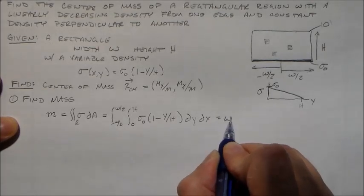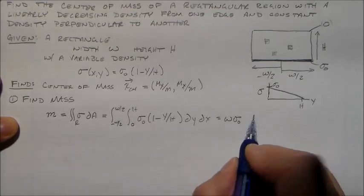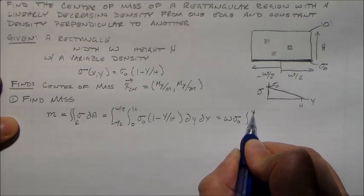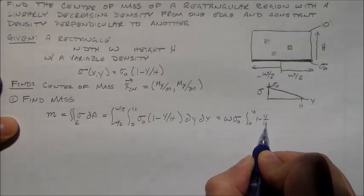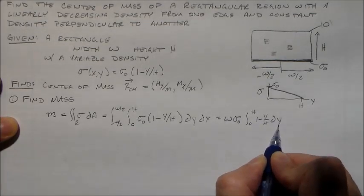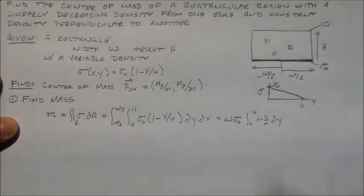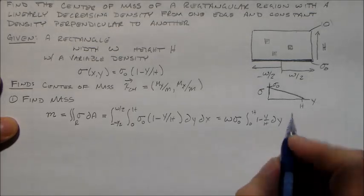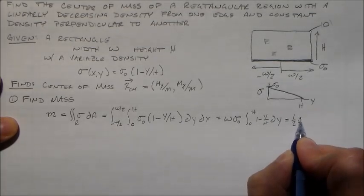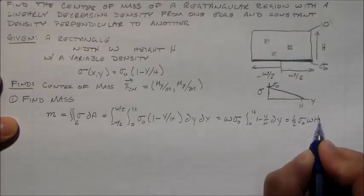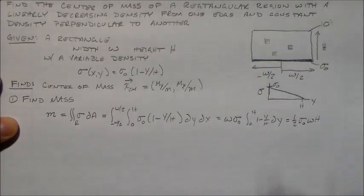The x bit is w, sigma naught comes out. We have integral 0 to h, 1 minus y over h, dy. This is just h minus 1 half h. So we have one half sigma naught width times the height.